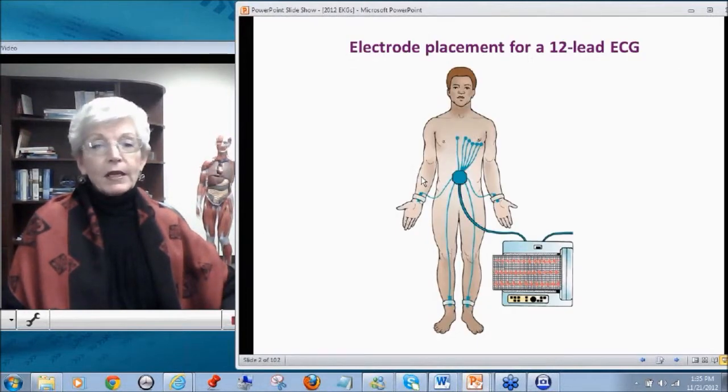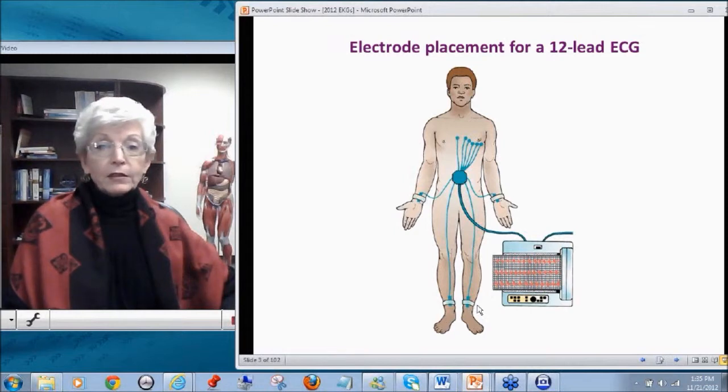First of all, when we're doing a 12-lead ECG, we use various placements and we actually only use 10 electrodes. So 10 electrodes positioned give us a 12-lead EKG. The electrodes, there's limb leads, one on each arm and each leg. And then the precordial leads, there's 6 of them. So the 4 limb leads and the 6 precordial leads are the 10 electrodes.